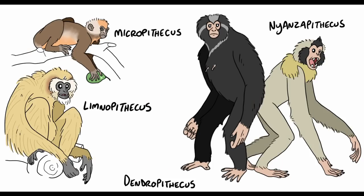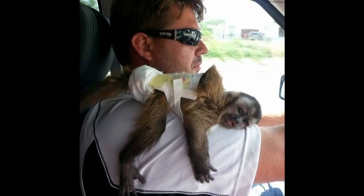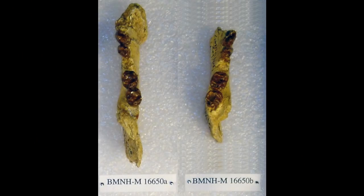Micropithecus is known for its diminutive size, as it is an ape that was roughly the size of a modern capuchin monkey — making Micropithecus the smallest known ape to have ever lived. Dendropithecus was originally thought to be a relative of modern gibbons due to its morphology lending itself to brachiation as well as its long, scimitar-like canine teeth; however, it has now been relegated to a stem ape.